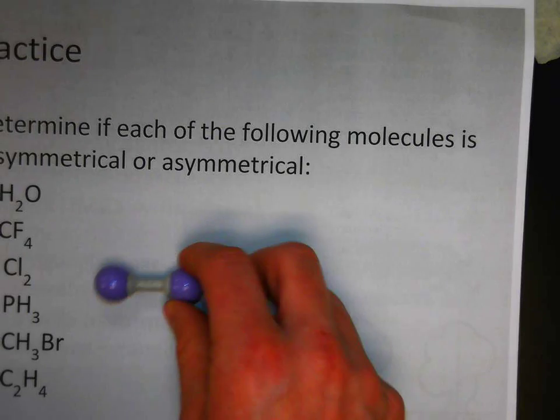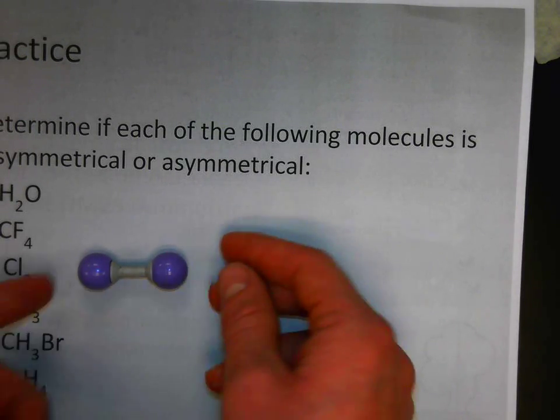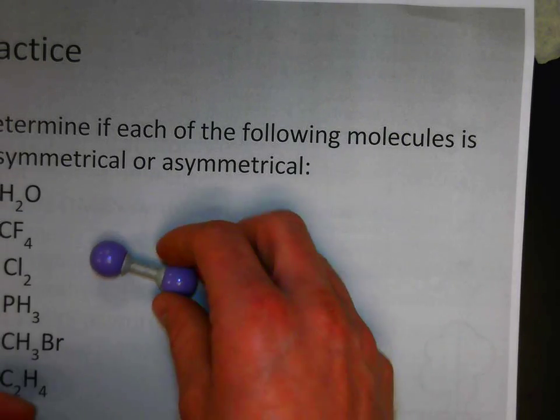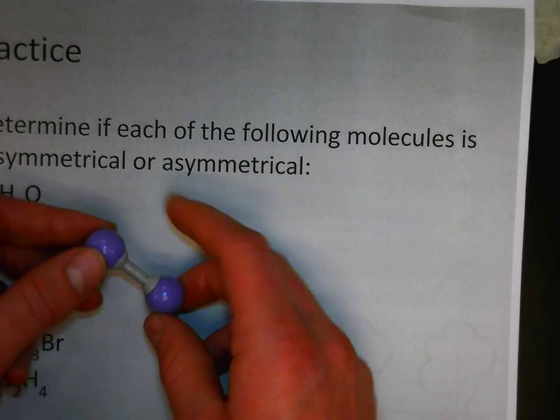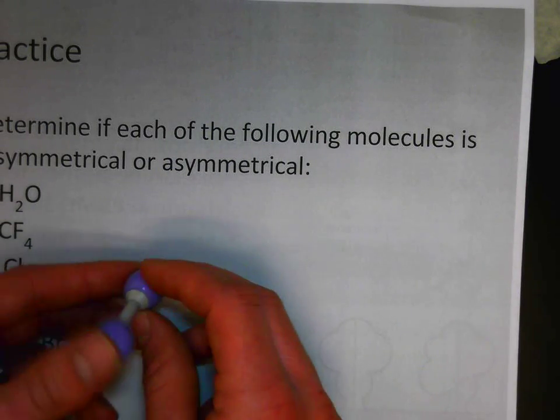Cl2. In the case of Cl2, I have two chlorines. I'll represent that with the purples here. Since this is going to distribute the electrons evenly, any electronegativity would be distributed evenly, and it is the same from all sides. We're going to consider that to be symmetrical.